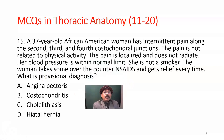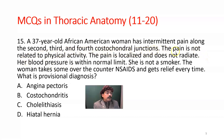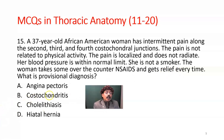A 37-year-old African-American woman has intermittent pain along the second, third, and fourth intercostal junctions or joints. The pain is not related to physical activity. Pain is localized and does not radiate. Her blood pressure is within normal limits. She is not a smoker. The woman takes over-the-counter NSAIDs and gets relief every time. What is your provisional diagnosis?